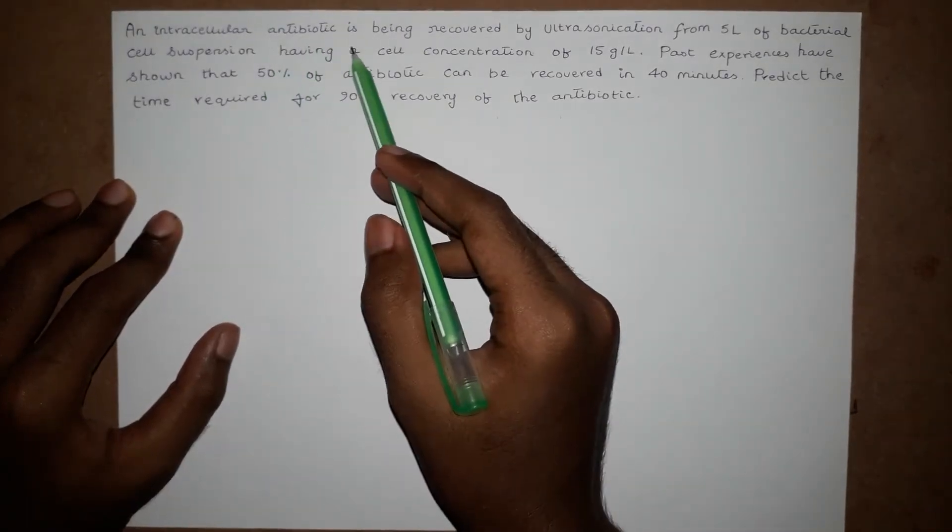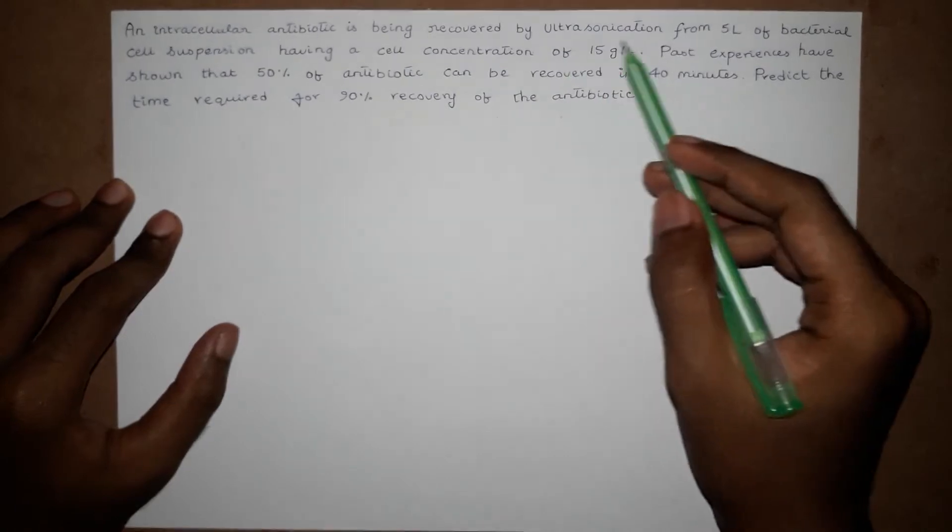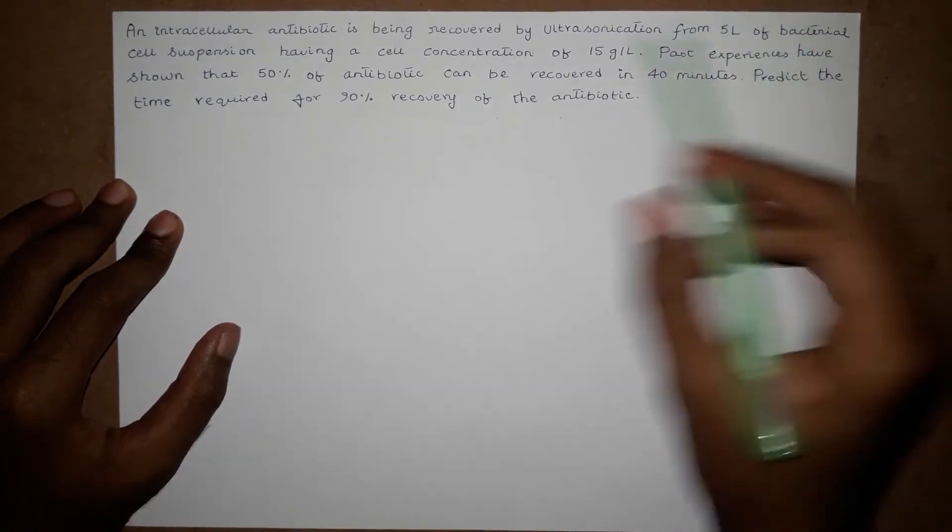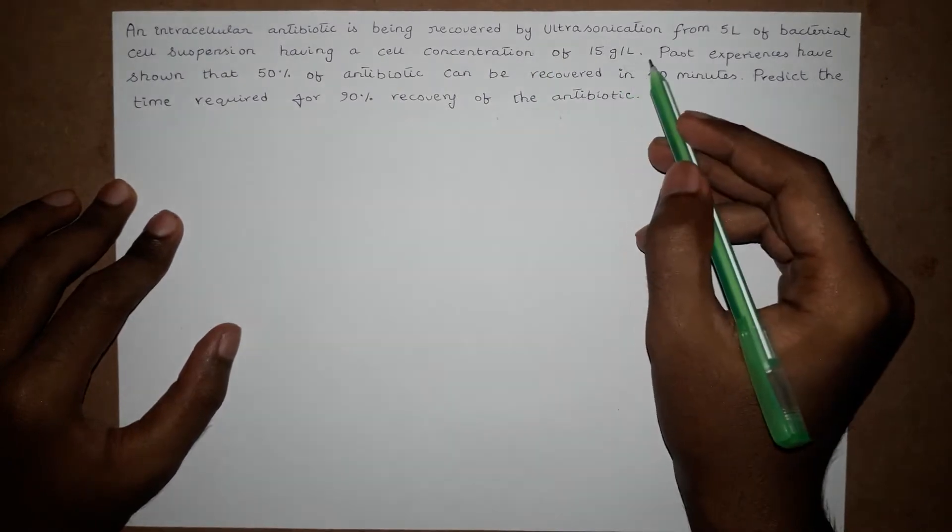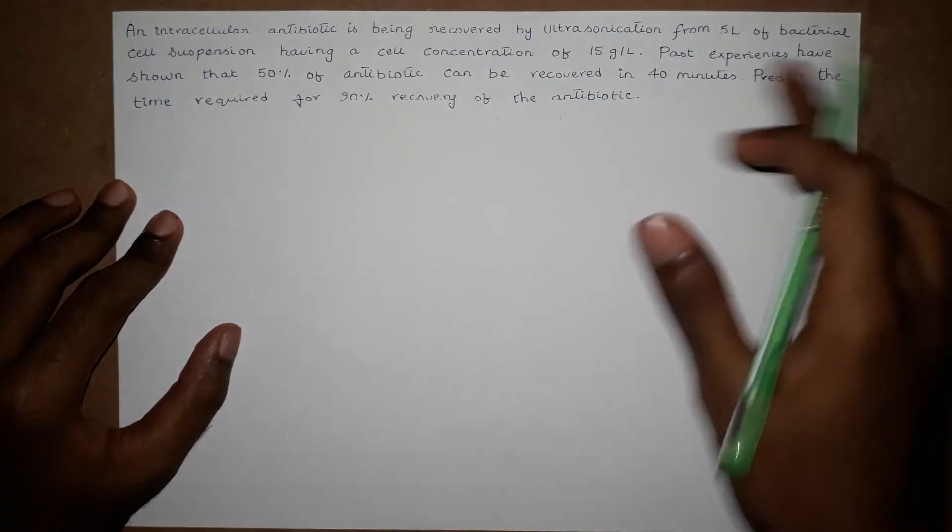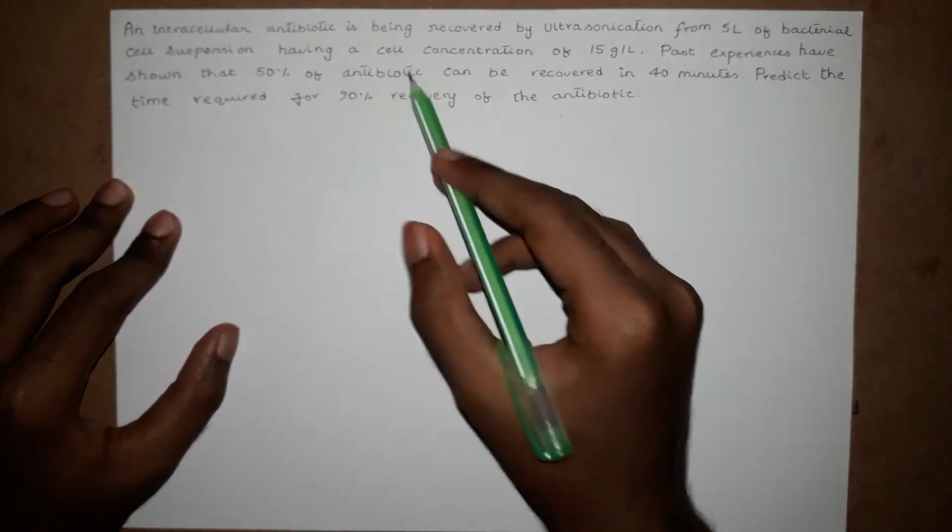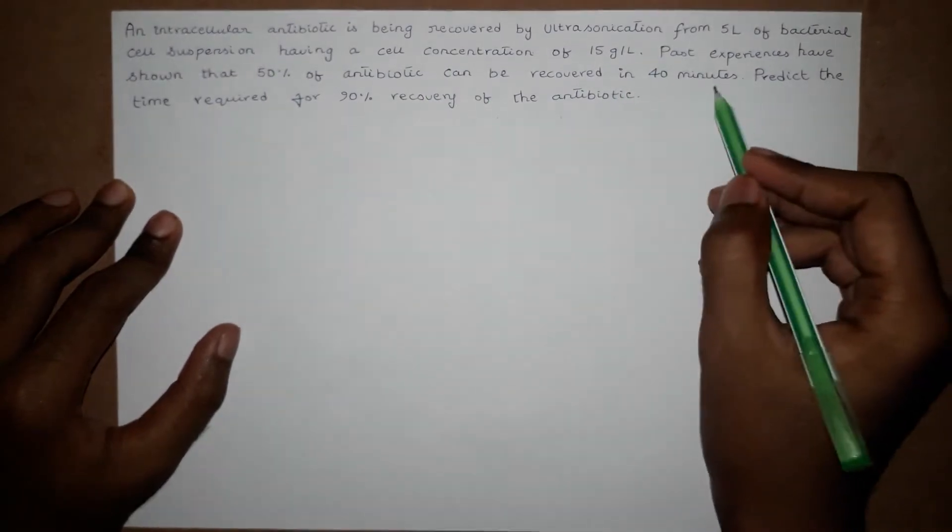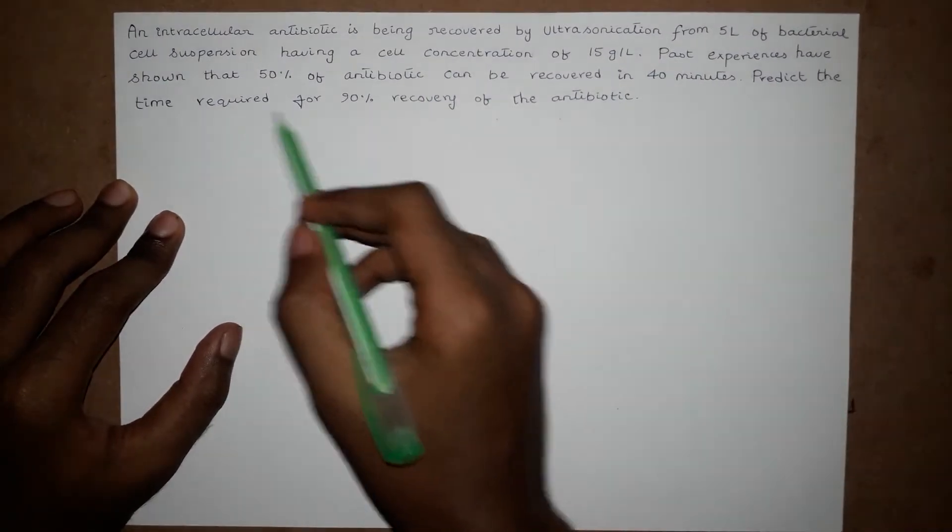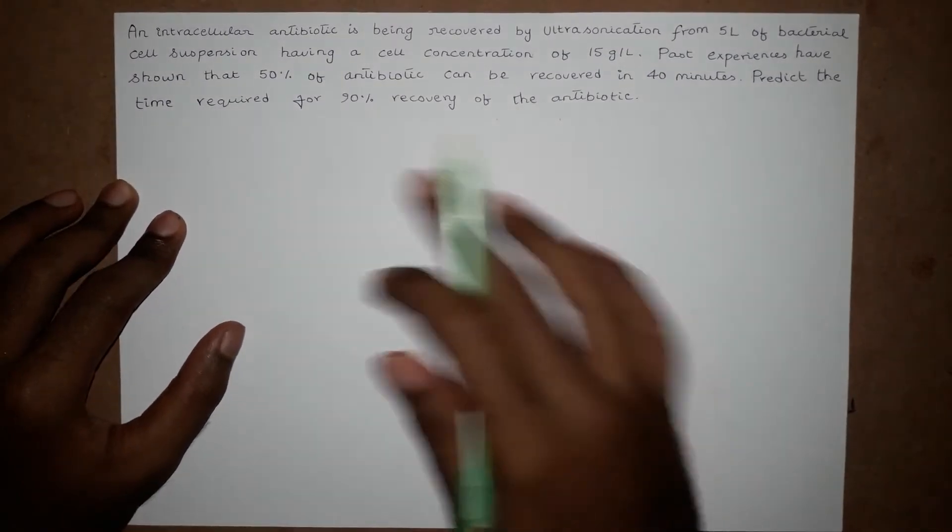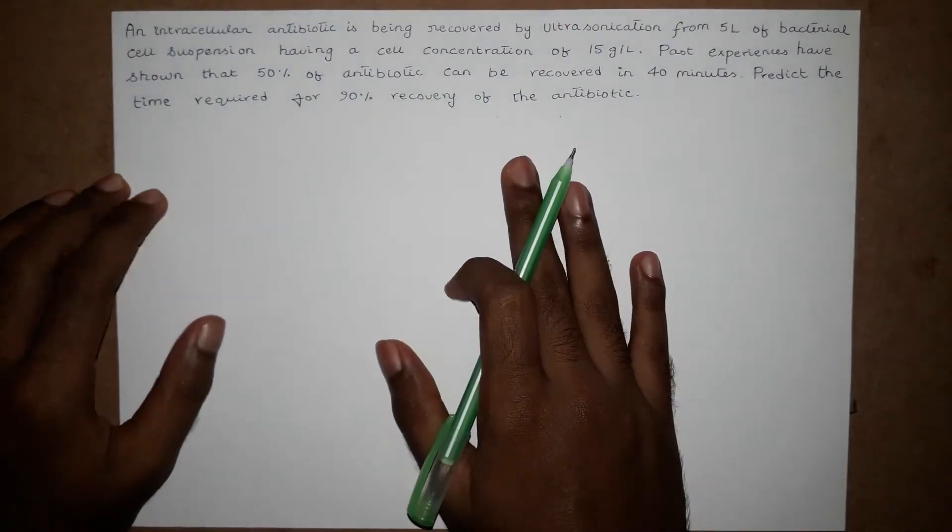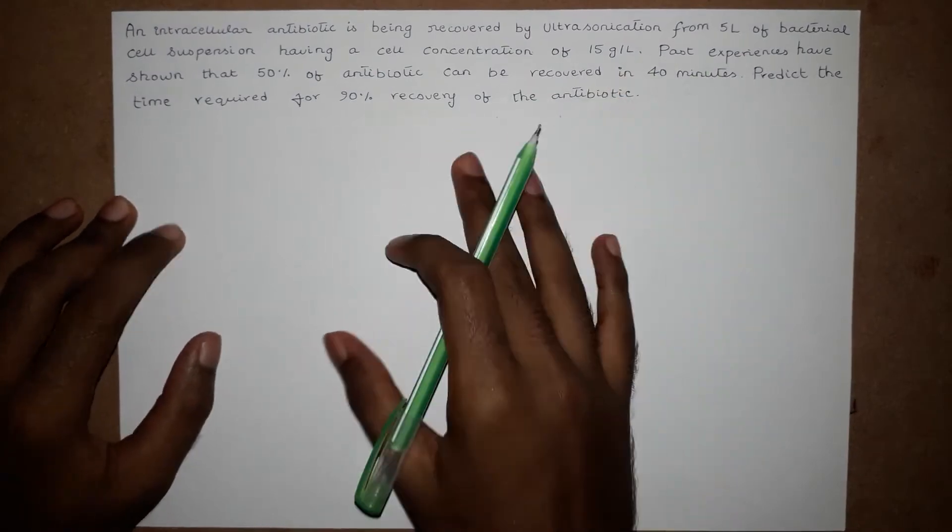An intracellular antibiotic is being recovered by ultrasonication from 5 liters of bacterial cell suspension having a cell concentration of 15 grams per liter. Past experiences have shown that 50% of antibiotic can be recovered in 40 minutes. Predict the time required for 90% recovery of the antibiotic.